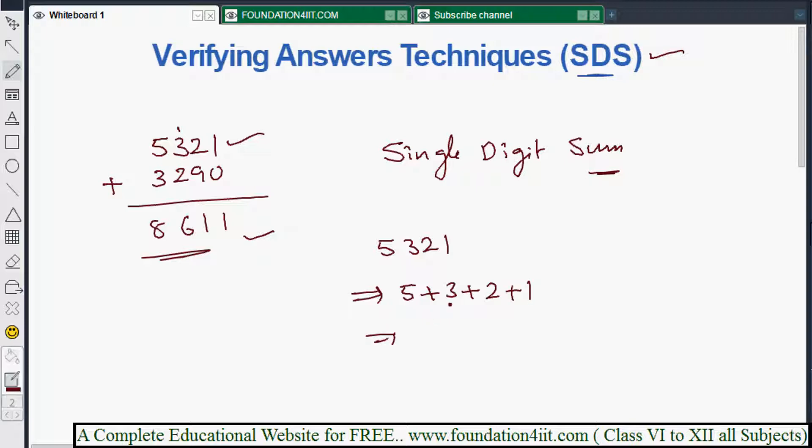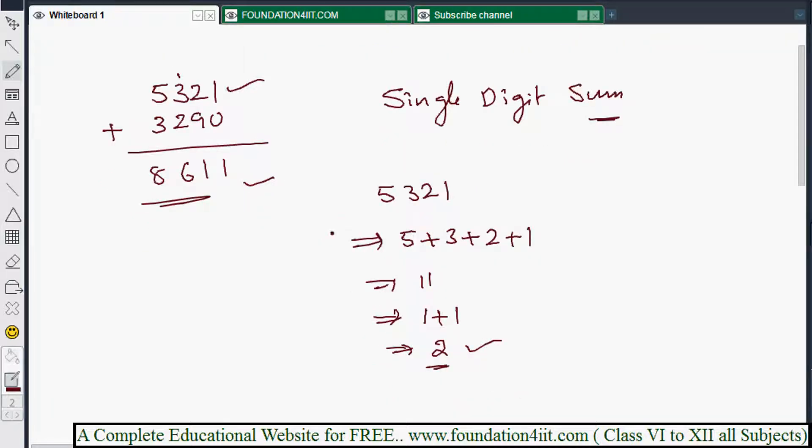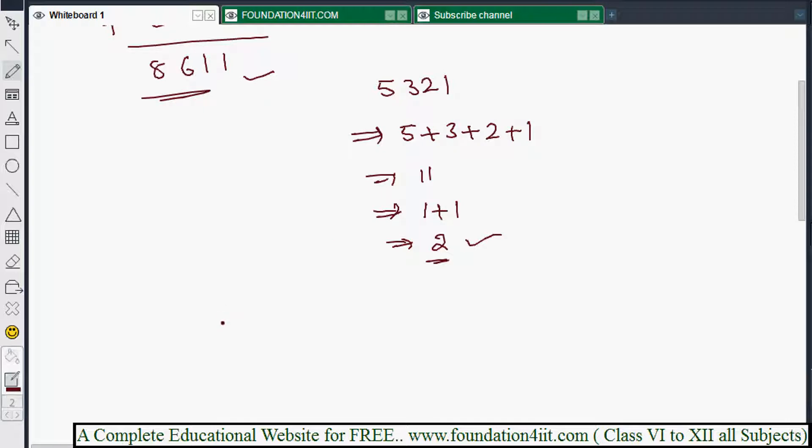5 plus 3 is 8, and 8 plus 2 is 10, 10 plus 1 is 11. Again, until you get single digit. Again 11 you got, so 11 is a two digit number. So again add this two digits, you'll get finally 2. So 2 is the single digit. That means SDS, single digit sum of 5321 is 2.